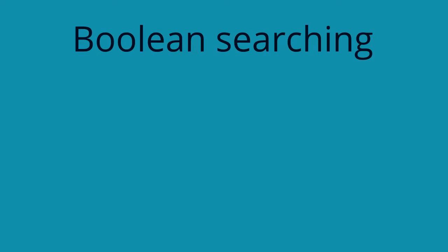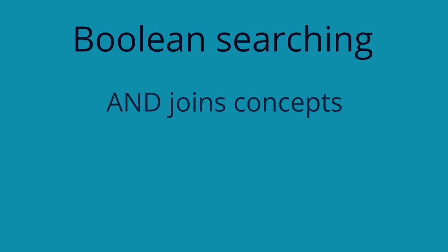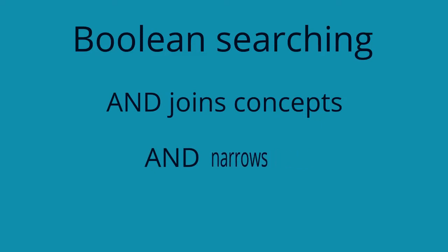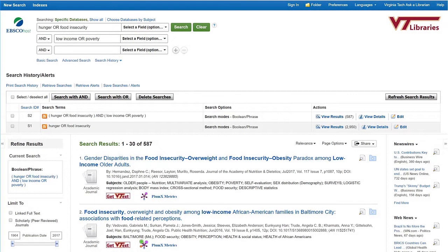While OR joins synonyms, AND joins concepts. Basically, AND narrows the results by telling the database that all of the concepts joined with AND must be present in the results. The more concepts we connect using AND, the fewer results we'll get. For example, if I use the word AND to add low income or poverty to my first concept, I'll go from around 2,800 results to only 587.